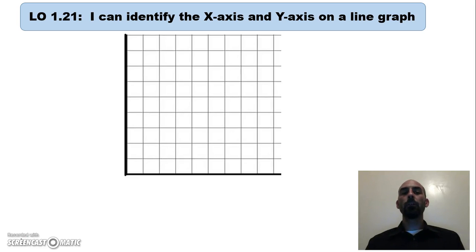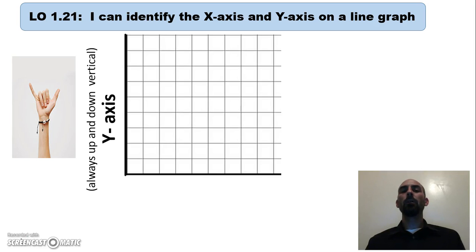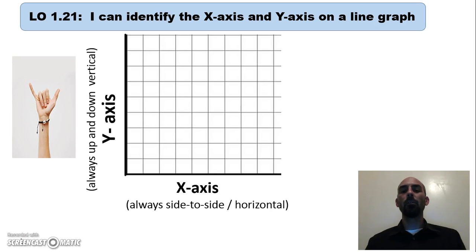Let's start with the first learning objective — this is information you'll just have to commit to memory. The y-axis is always up and down, which is vertical. I have students hold up their hand and make it like a Y, holding that Y up and down, to remember that the y-axis always goes up and down. The opposite is the x-axis, which is always side to side, or horizontal.